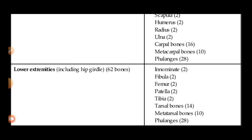Hip is one in number, femur is one in number, patella is also one in number. Below the patella is the tibia, and alongside it is the fibula. Then the tarsal bones, which are the ankle bones, are seven in number. Earlier we mentioned carpals — those are the wrist bones, eight in number — while tarsals are the ankle bones, seven in number.